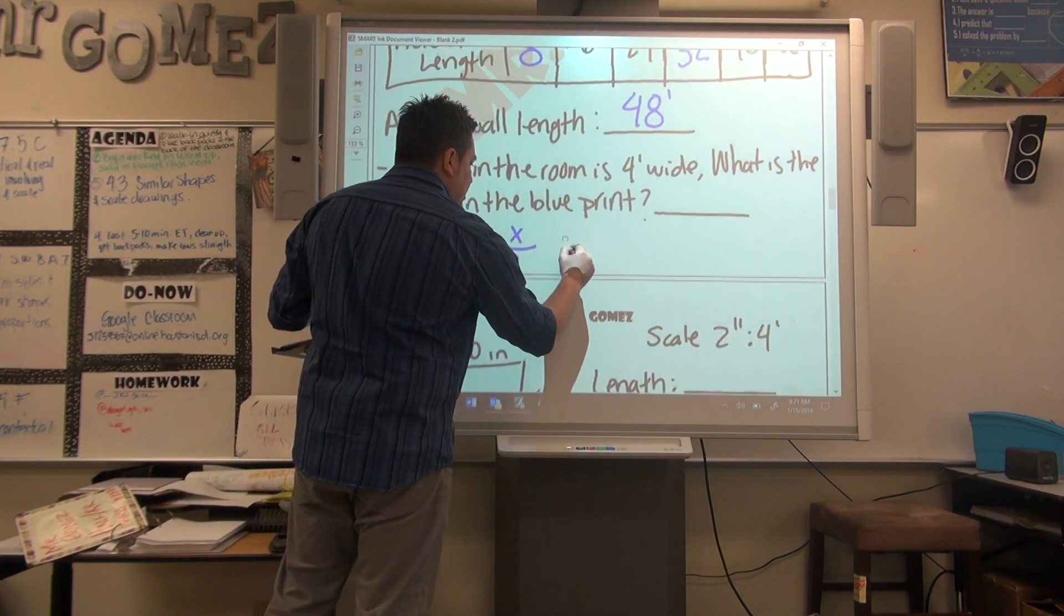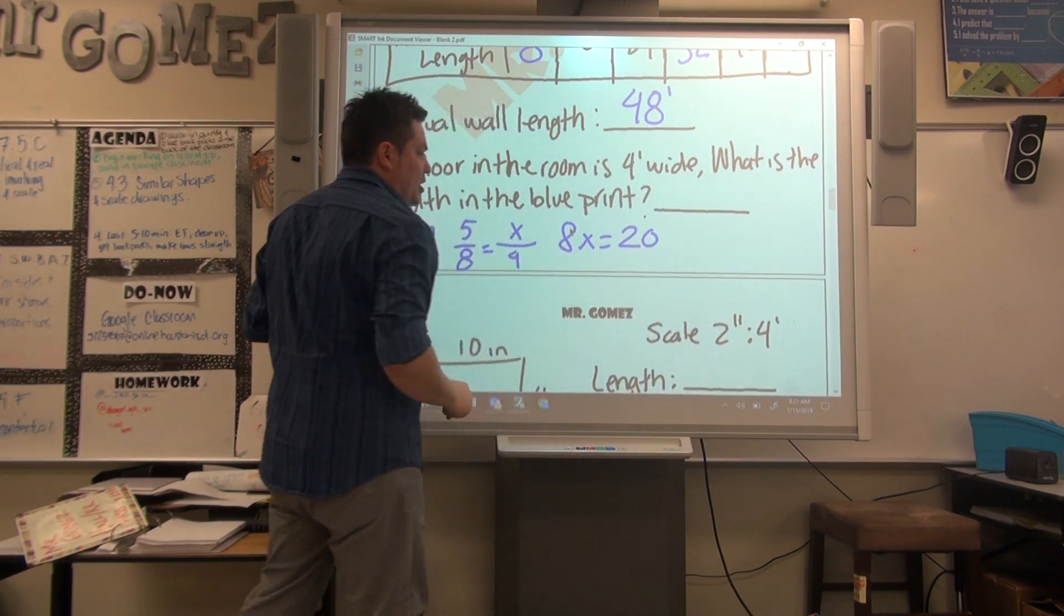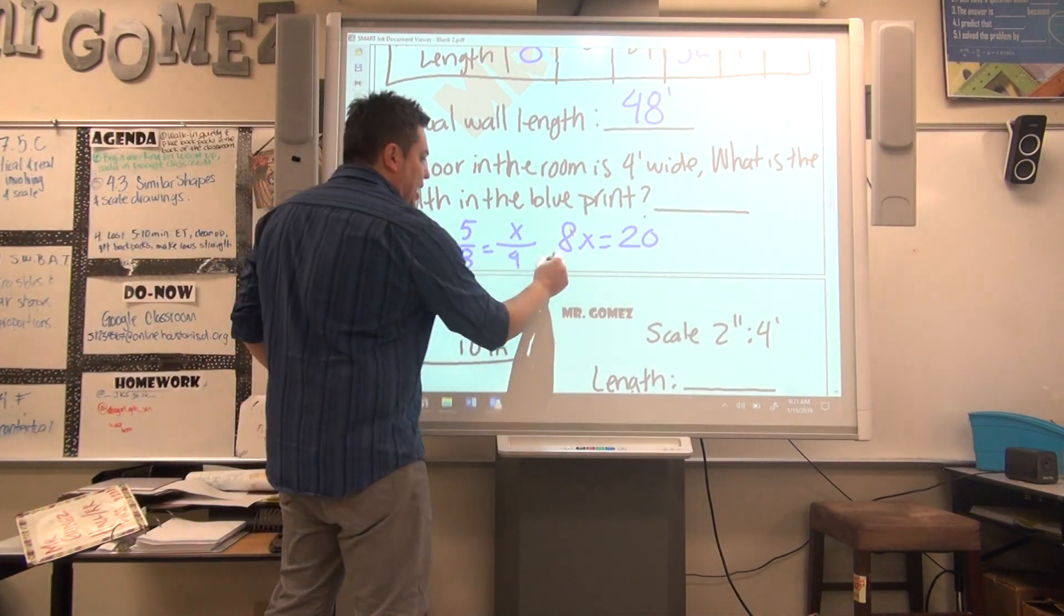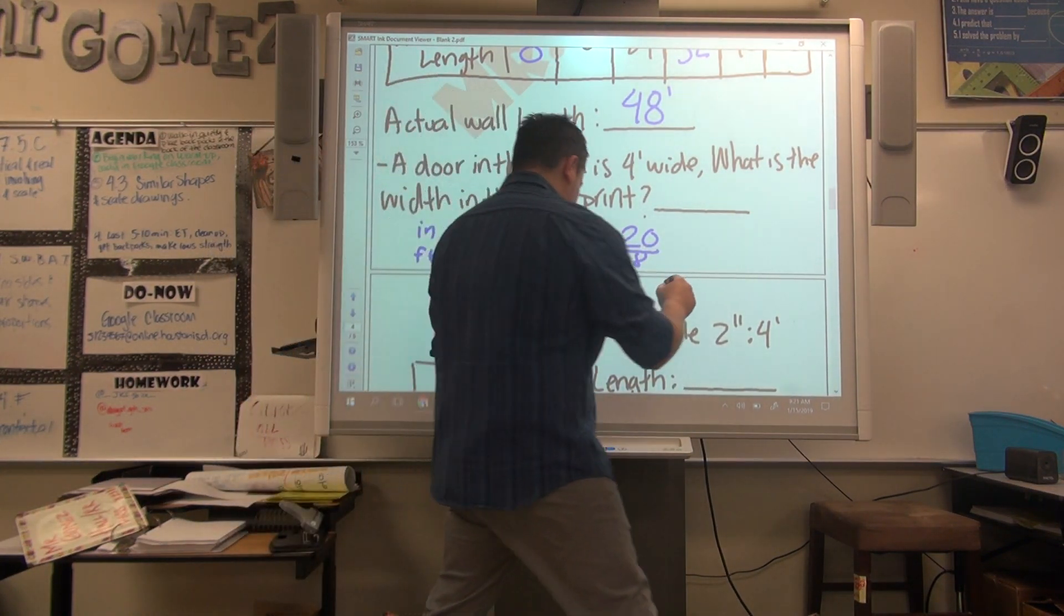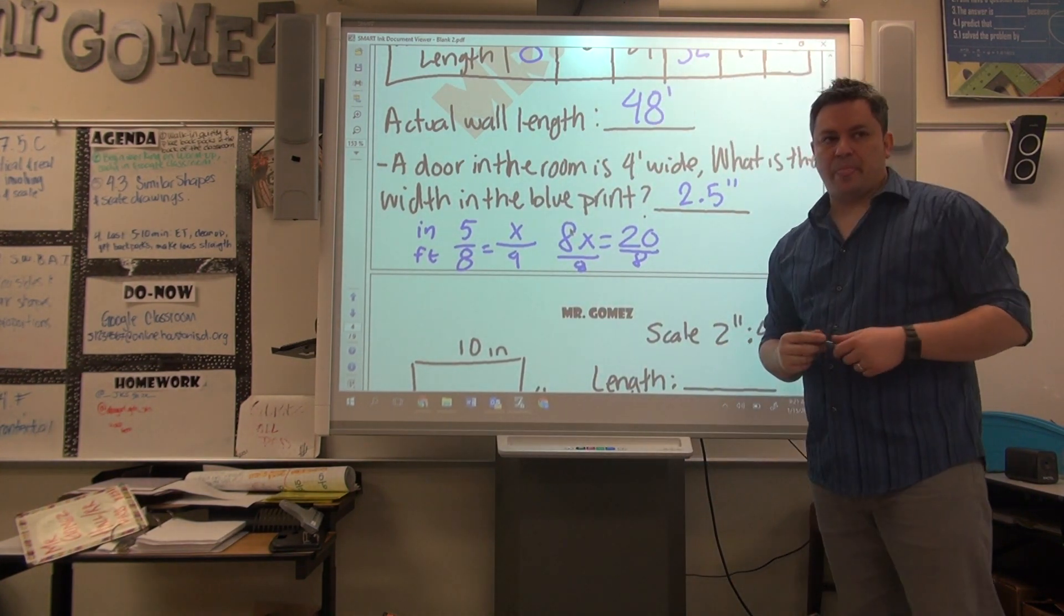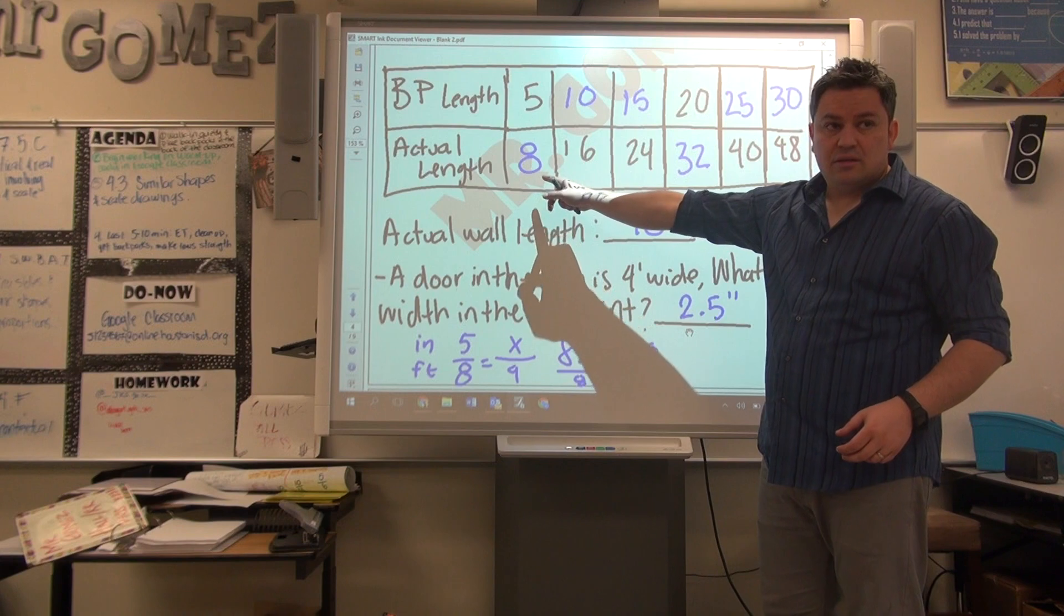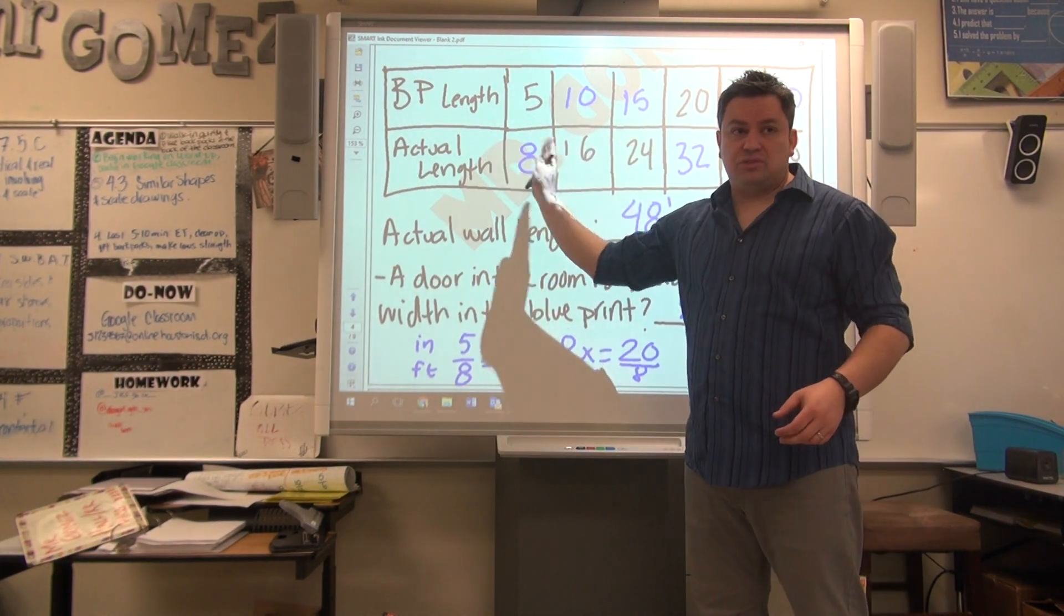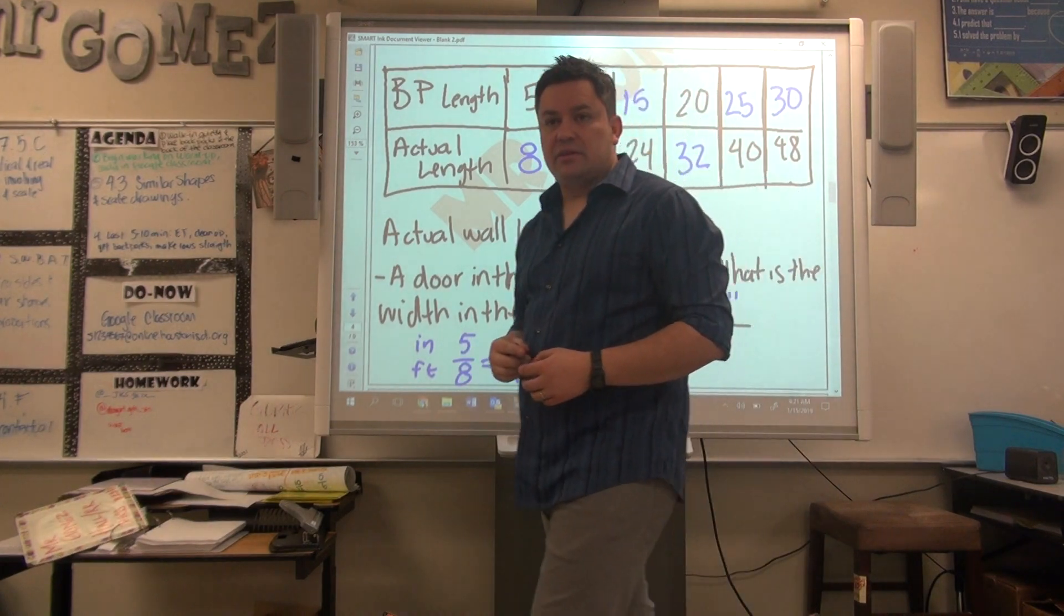You do cross products and find the value of x. So you're going to have 8x equals 20, and the last step is to divide by 8. When you divide by 8 on both sides, the answer is going to be 2.5 inches. And it kind of makes sense. If you have 8 and the blueprint length is 5, half those because 4 is half of 8, so half of 5 is 2.5.